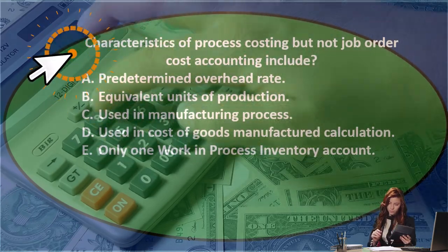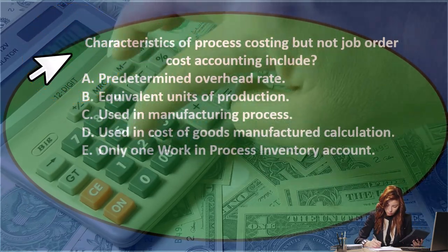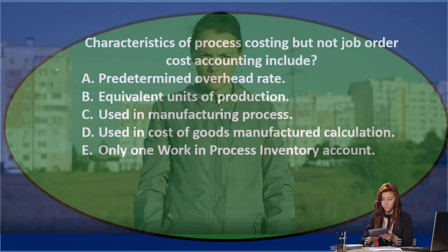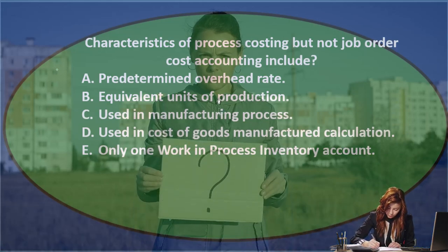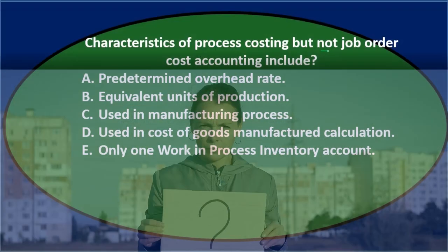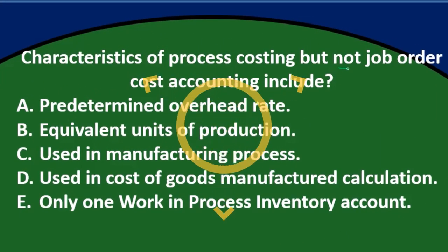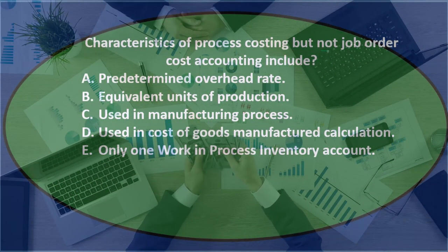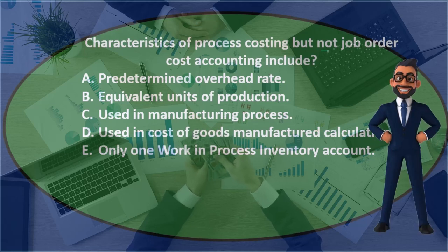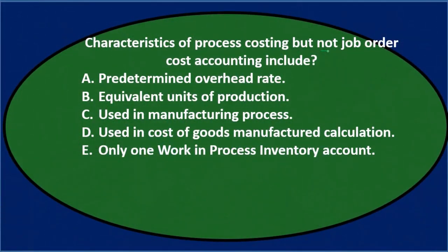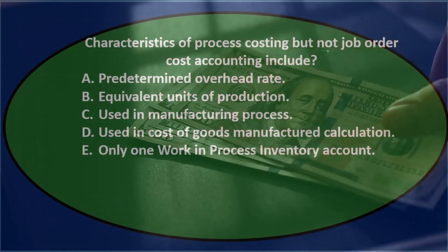Characteristics of process costing but not job order costing — we're thinking about these two types of costing systems. We want to know job order costing versus process costing. We're looking for characteristics of the process costing that are not part of the job order costing system. Process costing typically involves types of units that are mass produced, as opposed to specifically identified units of inventory.